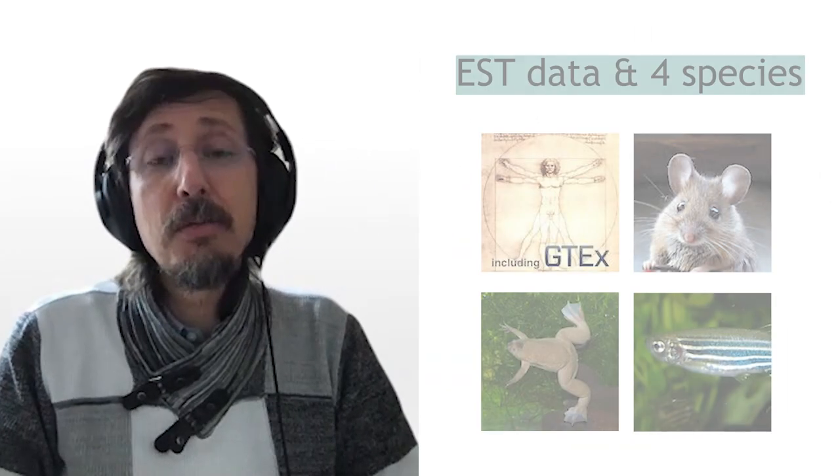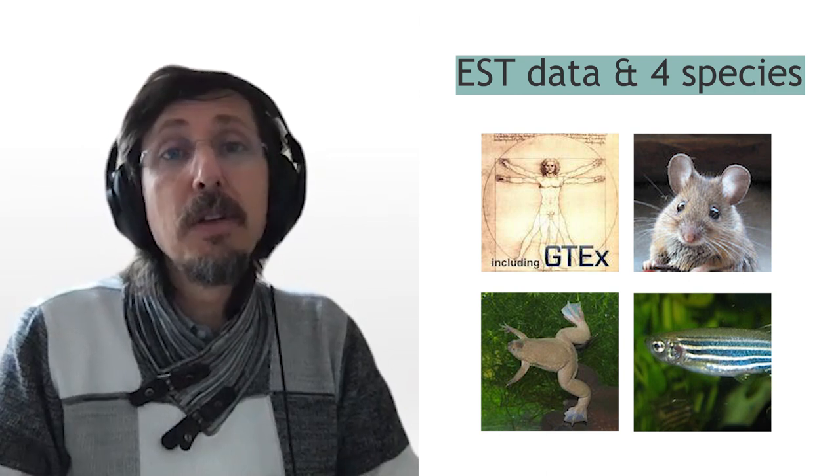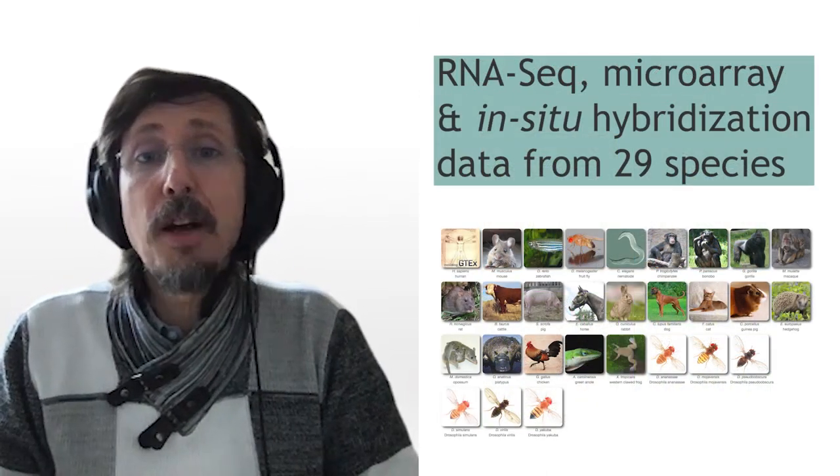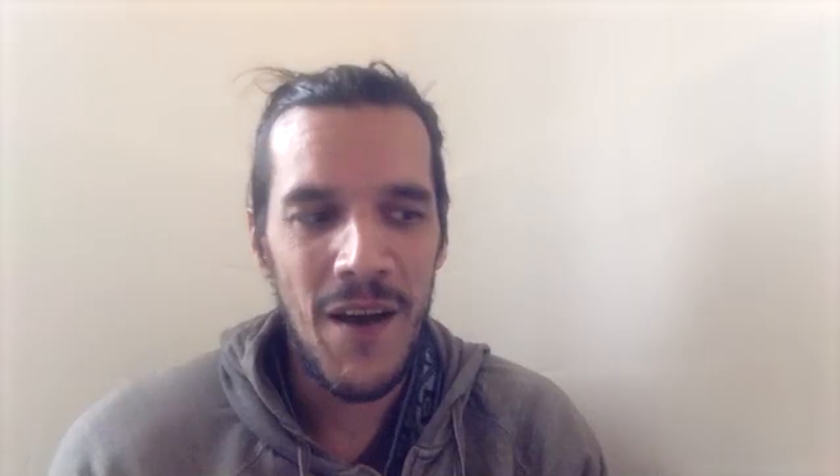Data integration is the key word for BG. In our initial release, BG only had expression sequence tags, which were an old technology to find gene expression, and from only four species. Since that first release, we have grown to include RNA-seq, Affymetrix microarrays, and in-situ hybridization from 29 species so far. Another evolution since the beginning is that BG, which originally was accessible only through a website, now has more and more tools: Bioconductor, R packages, and a web API so that researchers can perform their own analysis using R methods.